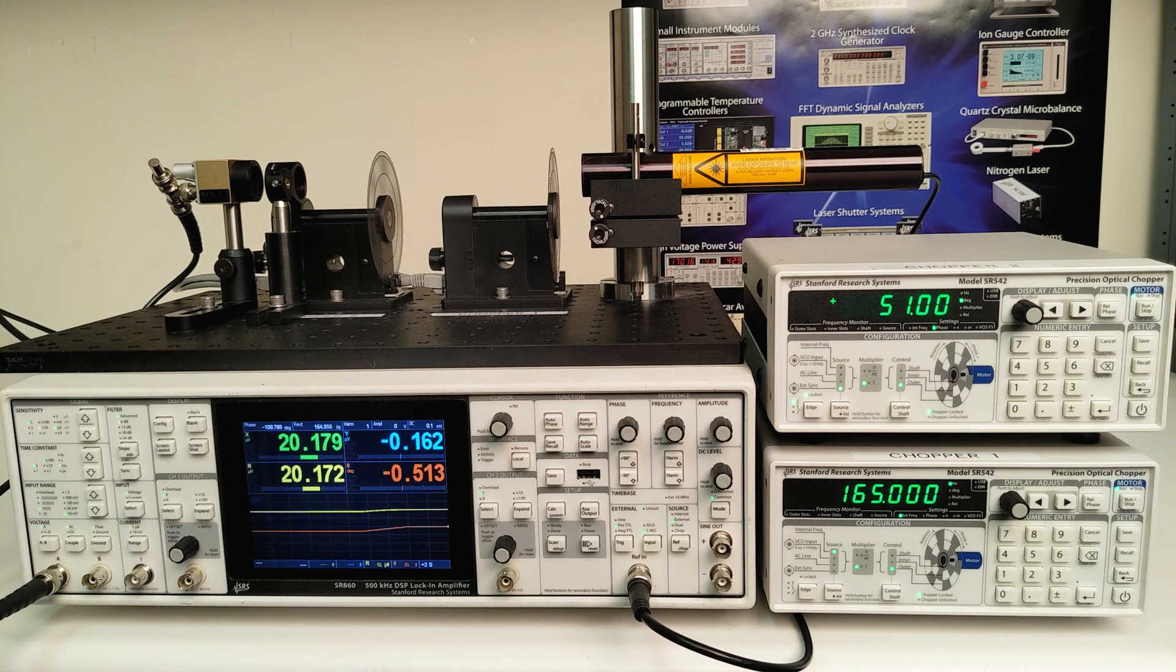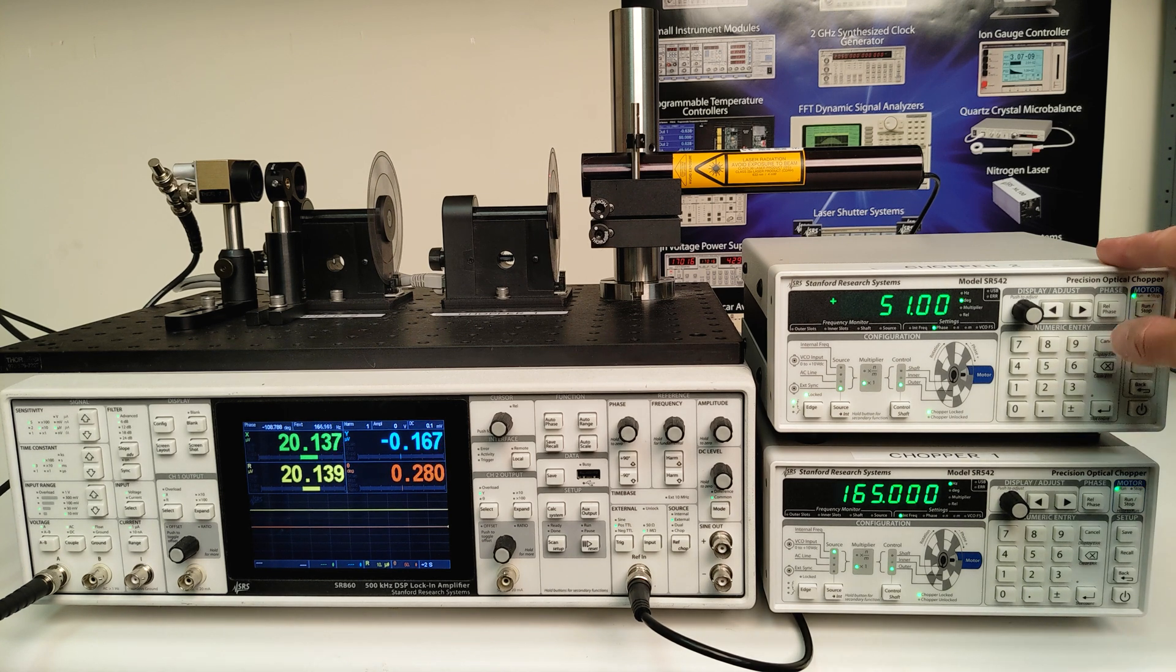If you watched the last video, you saw that a phase setting of 51 degrees on chopper 2 was needed for phase alignment. That's consistent with what we see here, since I haven't changed the experimental setup at all, other than adding the ND filter. I'll go ahead and hit rel phase to consider this zero.